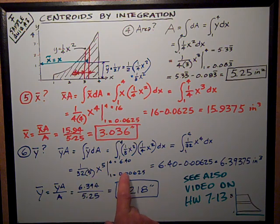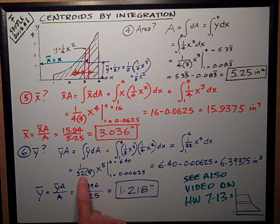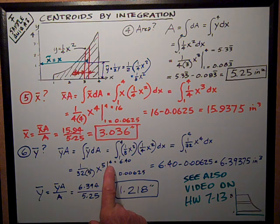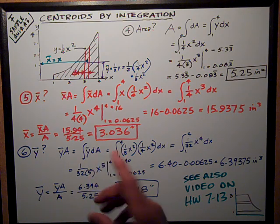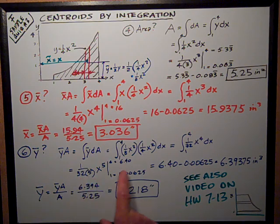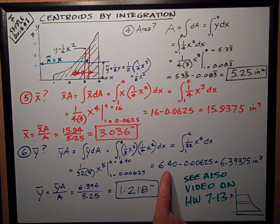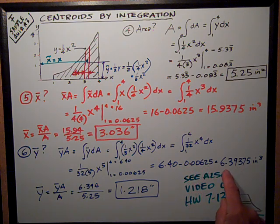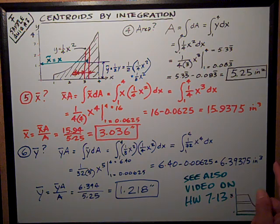I evaluate that out at x equals one. That equals 0.00625. X to the fifth is a big number, divided by this number is 6.4. 6.4 minus 0.00625 is y-bar A of 6.394 inches cubed.